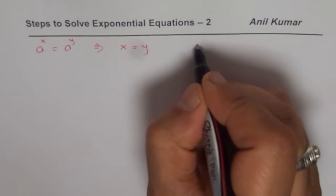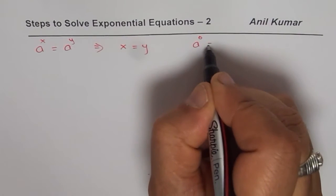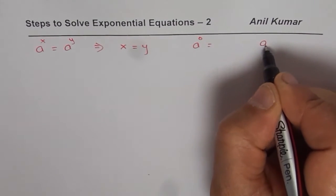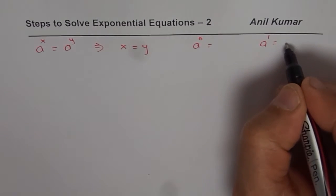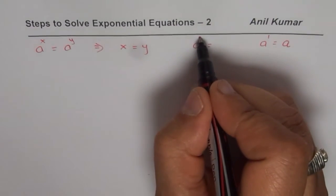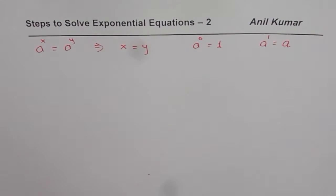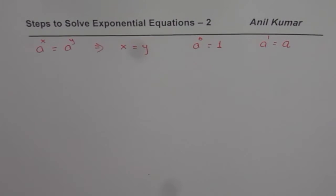We also learned that a to the power of 0 is what? And we also learned a to the power of 1 is what? Well, a to the power of 1 is, as you know, a. And anything to the power of 0 is 1. So these are the few learnings from part 1 of exponential equations.